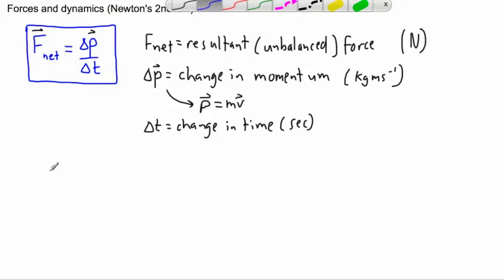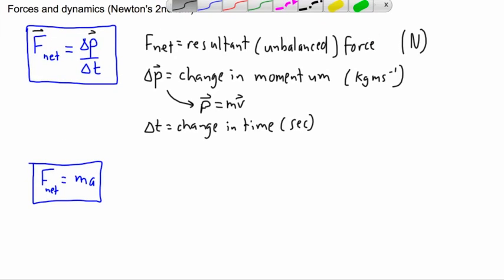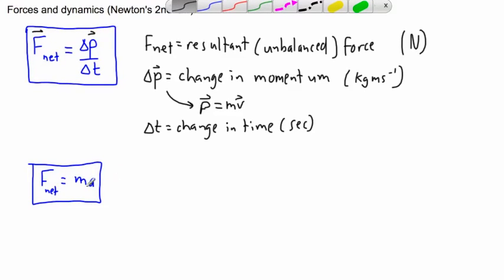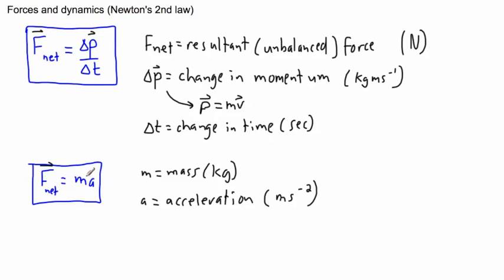A lot of students have learned a different version: F equals ma. I'd prefer to write it as F_net equals ma. F_net is still your resultant or unbalanced force. M is the mass, measured in kilograms, and a is the acceleration, measured in meters per second squared — or m/s².